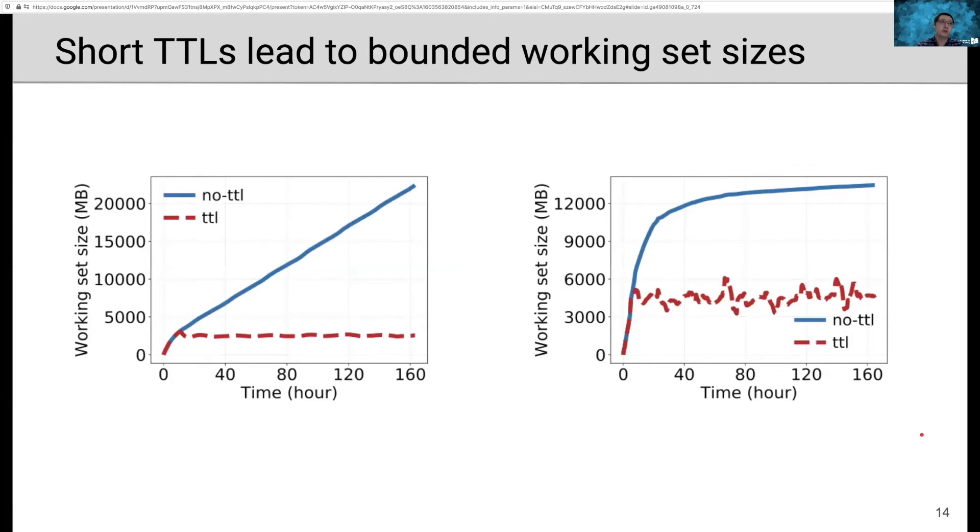So what does short TTL mean? Short TTL leads to bounded working set size. In these two figures, we show the working set size over one week for two caches. When we don't consider TTL, which is the blue curve, the working set size grows over time in both caches. While if we consider TTL, the working set size is almost always bounded as we show in the red curves. So therefore, there's no need for huge cache size if expired objects can be removed in time. For example, for this cache, we only need three gigabytes if we can remove expired objects in time.